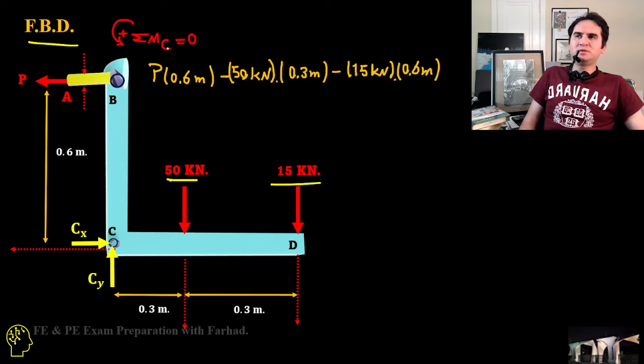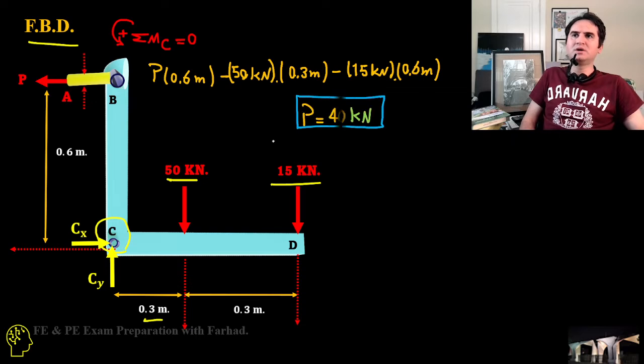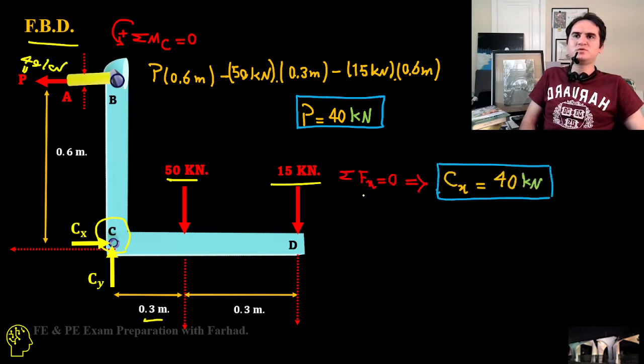If we develop the moment about point C, we simply cancel all these two forces. That says P times 0.6 meters minus 50 times 0.3 minus 50 times 0.6 meters equals 0. This gives us P is equal to 40 kilonewtons. Summation of forces in x-direction simply says if this is P in pull, C_x is pulled with the same amount of 40 kilonewtons.